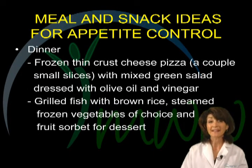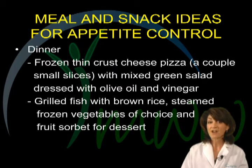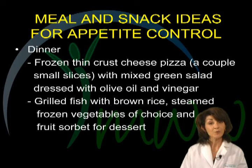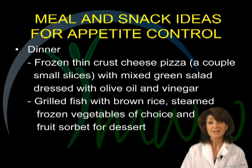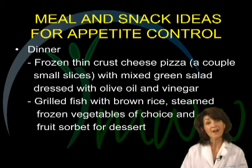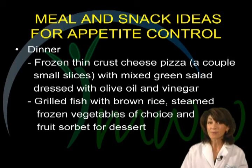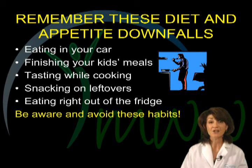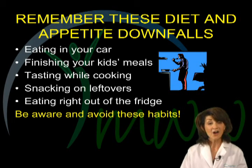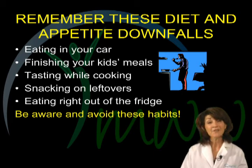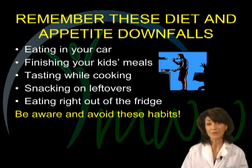For dinner meals that can help prevent the late-night munchies, try a few slices of thin crust pizza with a large mixed green salad topped with an olive oil and vinegar dressing, or some grilled fish with brown rice or a baked potato, steamed fresh or frozen vegetables, and some fruit sorbet for dessert. Making a small serving of dessert a planned part of your meal is very important to helping take the emotion out of the food. Remember these important diet and appetite-controlling downfalls: eating in your car, finishing your kids' meals, tasting food to excess while cooking, snacking on leftovers while cleaning up, and even eating right out of the refrigerator. Be very aware and avoid these habits at all costs.